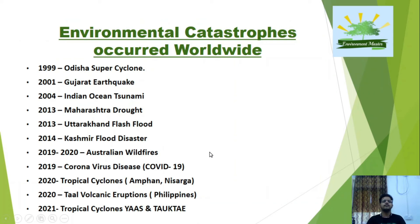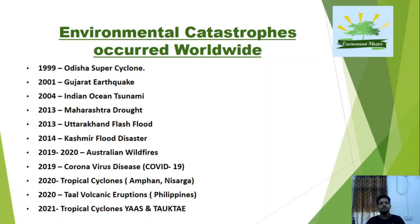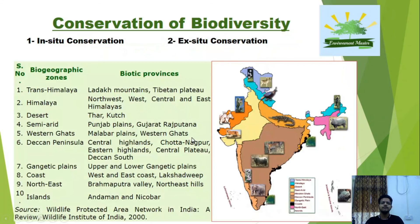In the last 20–25 years, India has suffered various catastrophes: the 1999 Odisha Super Cyclone, the 2001 Gujarat earthquake, the 2004 Indian Ocean Tsunami which took over one lakh lives, the 2013 Maharashtra drought, the 2019–20 Australian wildfires causing massive loss of animals and biodiversity, the 2019 coronavirus disease, the 2020 tropical cyclones Amphan and Nisarga, the 2020 Taal volcanic eruption in the Philippines, and the 2021 tropical cyclone Yaas which hit the eastern coast of India.